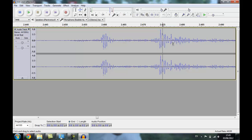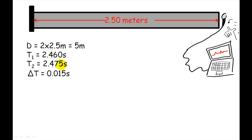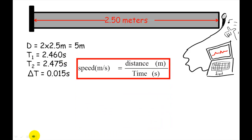To calculate speed you just do distance divided by time. We've found the times between the incoming click and the reflected click. To find the change in time we do t2 minus t1, which gives us 0.015 seconds. Substituting this into the speed formula: the pipe is 2.5 metres long, but the sound had to travel down and back again, so it's double that — 5 metres. So speed equals 5 divided by 0.015.